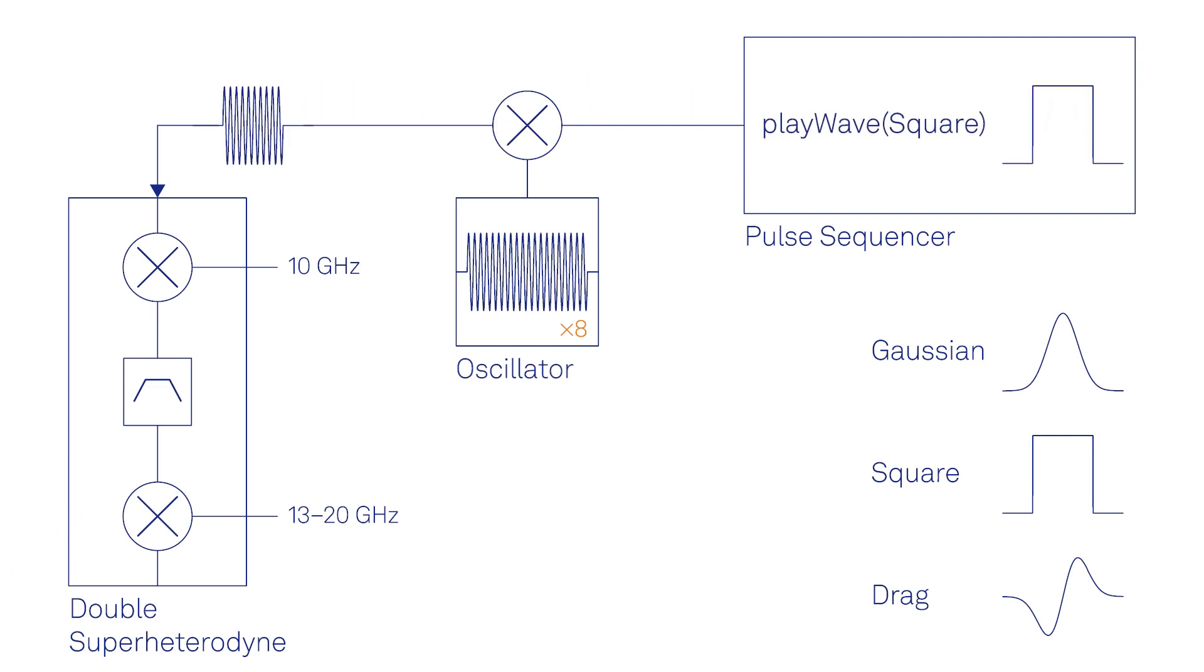For this, choose one of up to 8 digital oscillators which feature real-time frequency and phase control. After digital upconversion to 2 GHz,